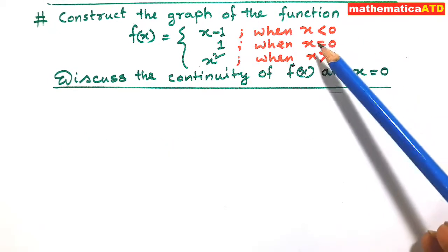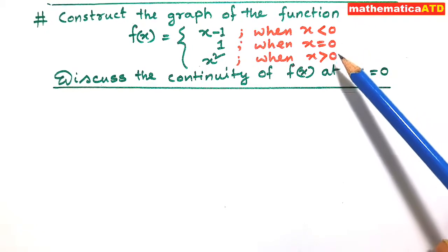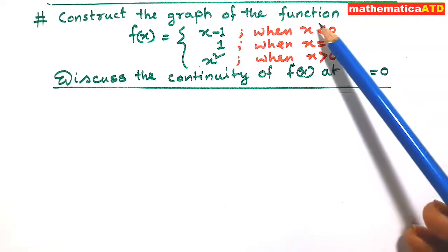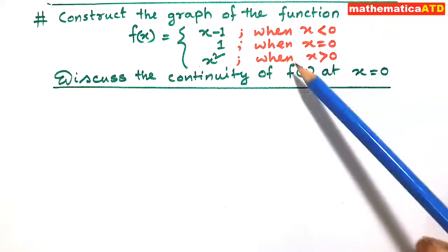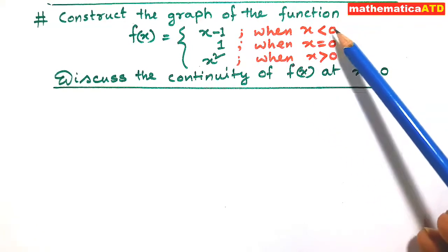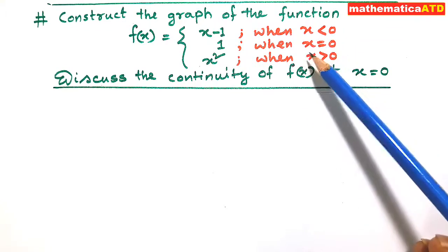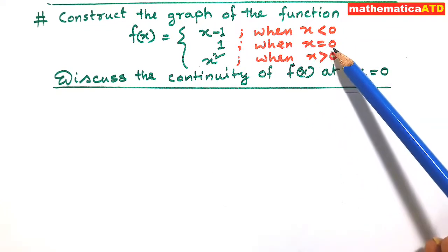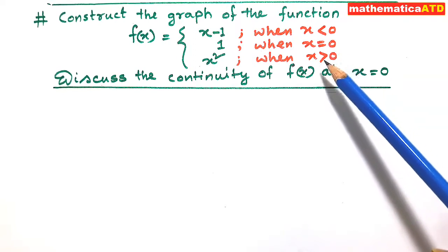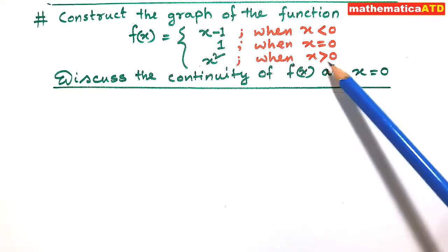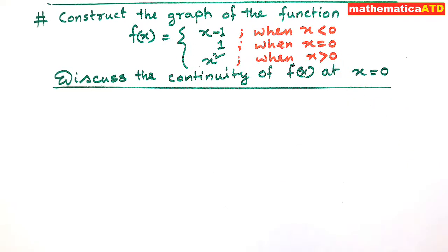Friends, this is a piecewise function and the domain is divided into several parts. The first part is x is less than 0, the second part is at the point x is equal to 0, and the third part is for x is greater than 0. So one by one we shall first of all draw the graph of the pieces.